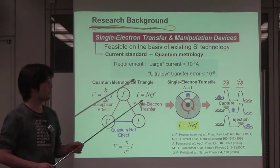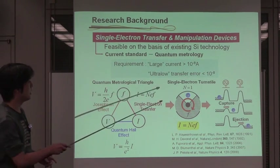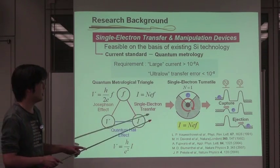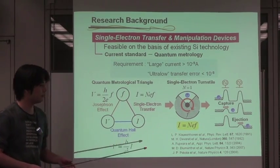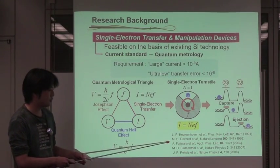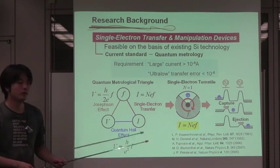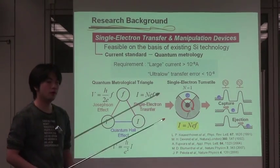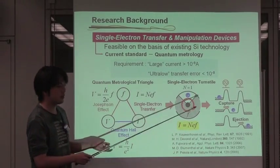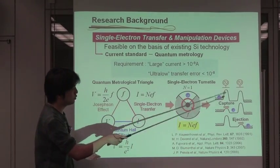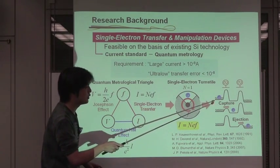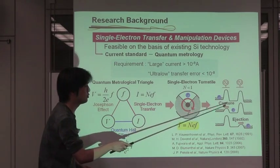So far, the single electron transfer, based on the so-called turnstile operation, has been proposed and demonstrated in a wide variety of systems: the gallium-arsenic quantum dot, the silicon nanowire MOSFET, and the superconducting junction. This is a schematic diagram of the single electron turnstile operation. Basically, by lowering the two side barriers alternately, we can transfer the single electron from the left to right.